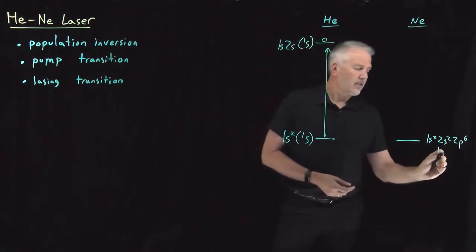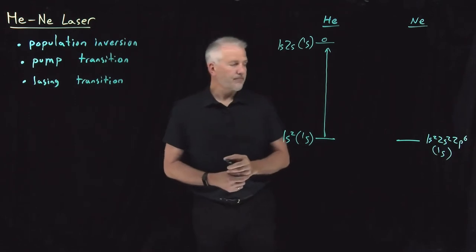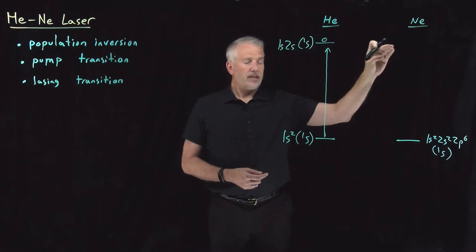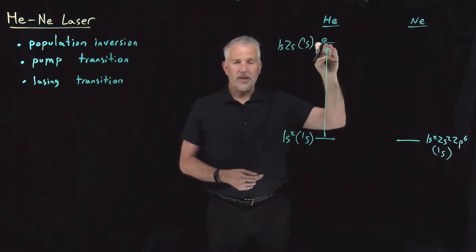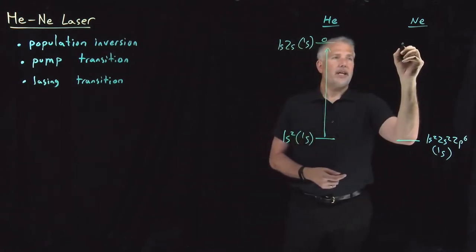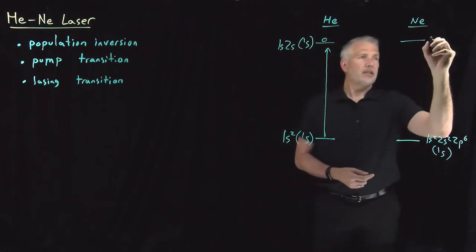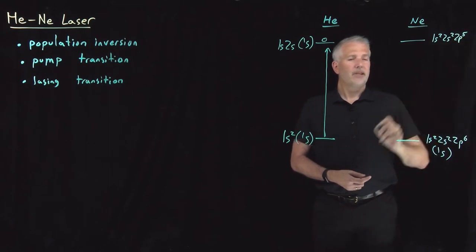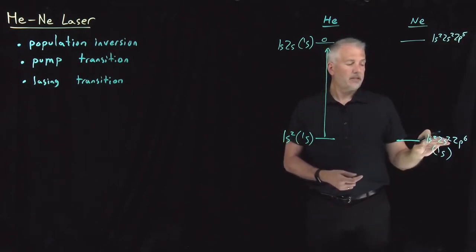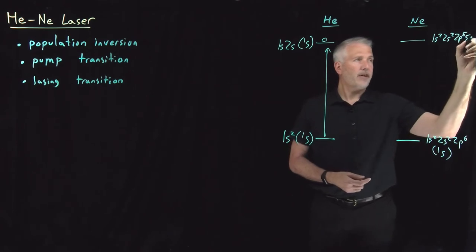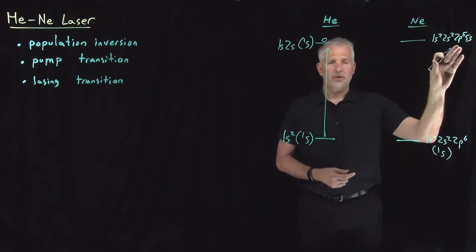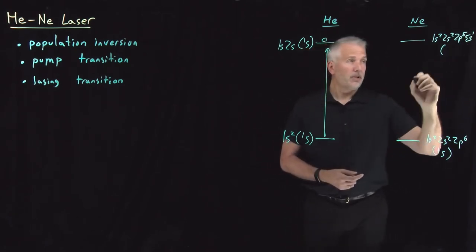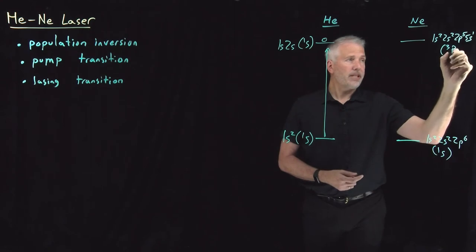That is a singlet S term symbol for the ground state. Just so happens that there's an excited state of neon that's pretty close to the same energy as this particular excited state of helium. So that excited state for neon, as an electron configuration, you could write 1s2, 2s2, 2p5, and then the 10th electron is in the 5s state. So it's 1s2, 2s2, 2p5, 5s1.